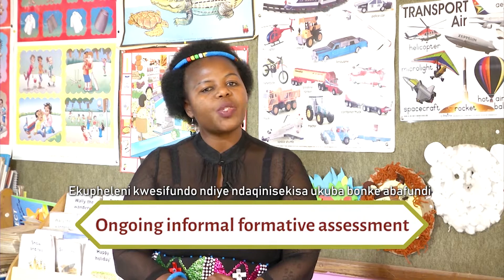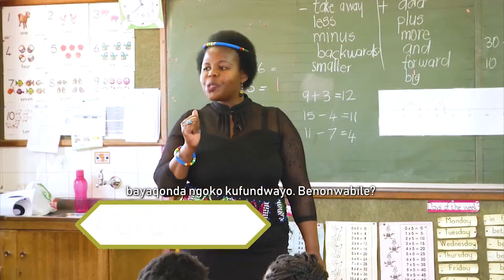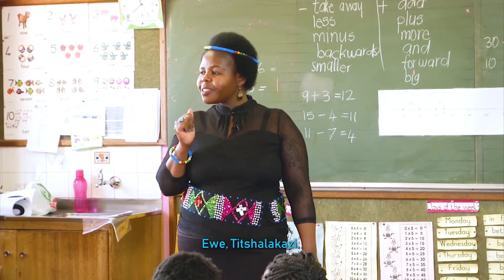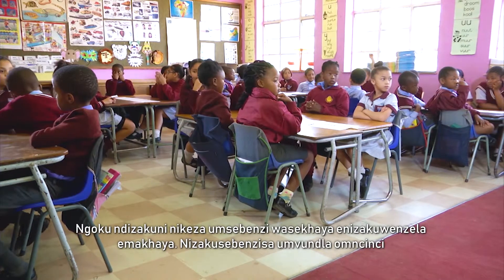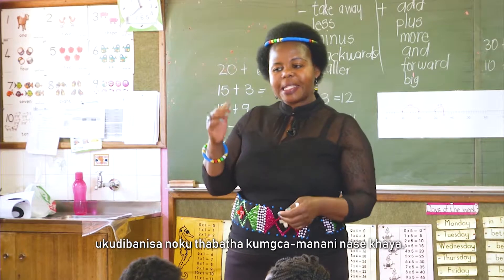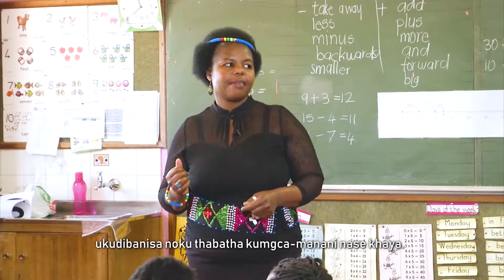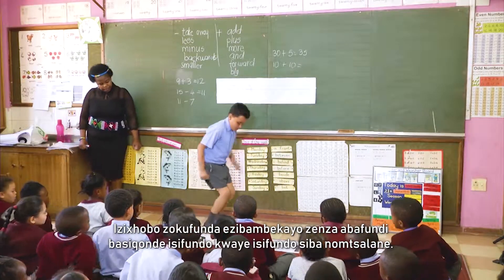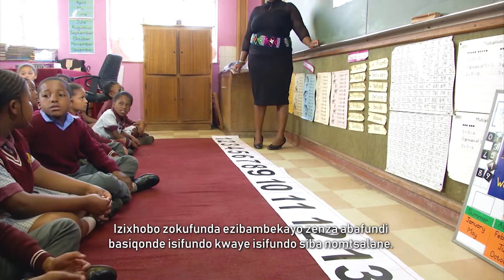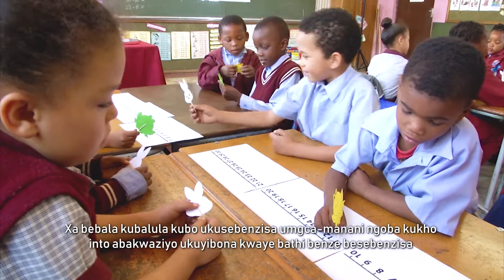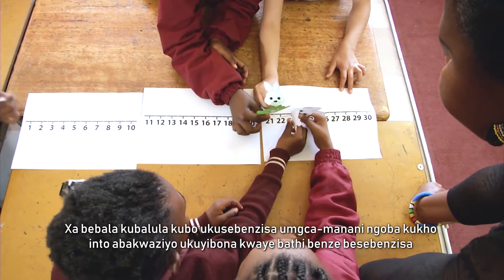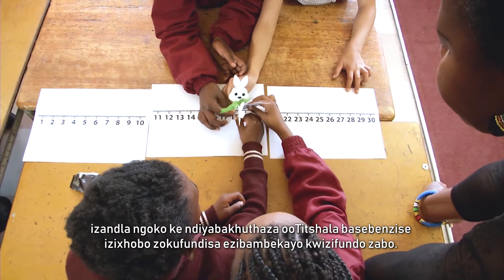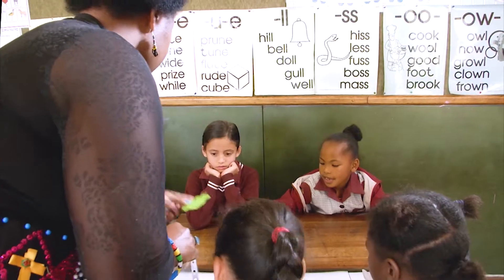At the end of the lesson, I made sure that the learners understood what we had been learning about. Did you enjoy? Yes, ma'am. I gave them homework — using the bunny at home to plus and minus on a number line. Concrete objects make learners understand the lesson and make it more interesting. When they use a number line there is something they can see and do physically, and children cannot forget what they did physically. I encourage teachers to use concrete objects in their lessons.